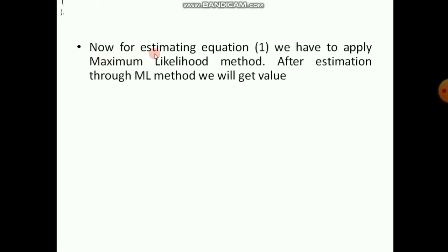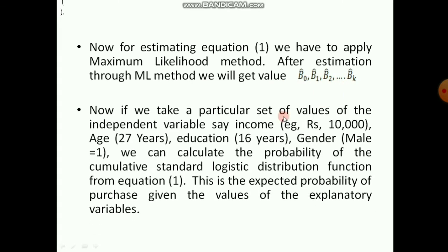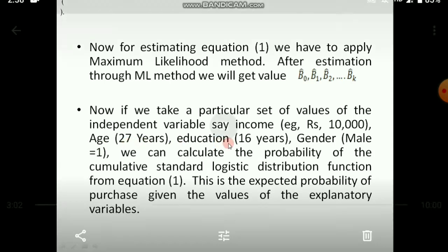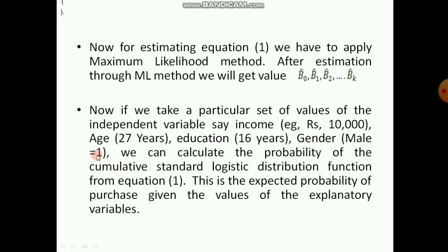For estimating equation 1 we have to apply the maximum likelihood method. After estimation we get the coefficients beta_0 hat, beta_1 hat, beta_2 hat, etc. If you take a particular set of values from any respondent — say income is 10,000, age is 27 years, education is 16 years, and gender is male (coded as 1) — you can calculate the probability from the cumulative standard logistic distribution function in equation 1, which ultimately gives 1 / (1 + e^something).